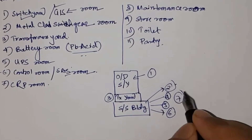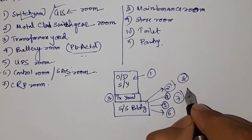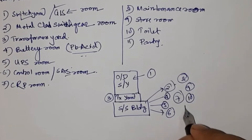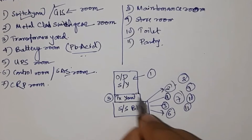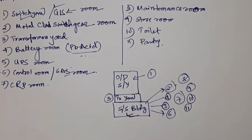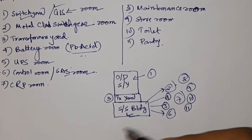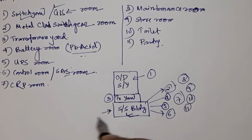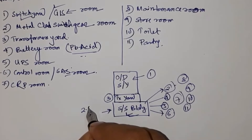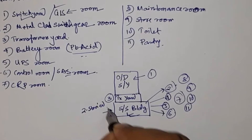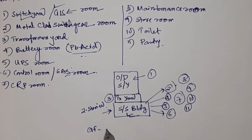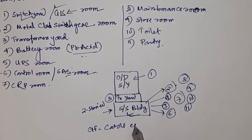The CRP room, maintenance room, store room, toilet, pantry, and so on — all these will be housed inside this substation building. You have to make the layout in such a way as to accommodate all of these. In case there is a high cable load, you can make it a two-storied or three-storied building where the ground floor is used as a cable cellar room.